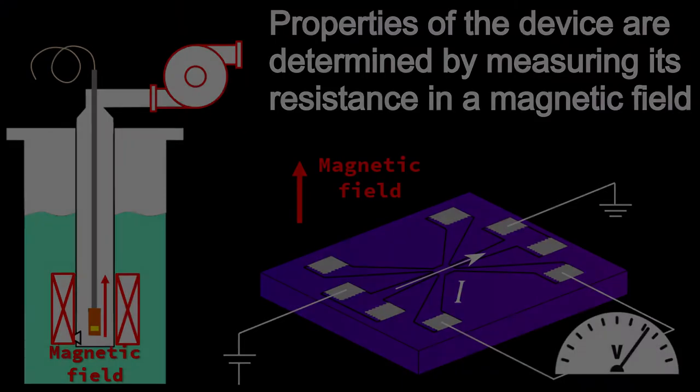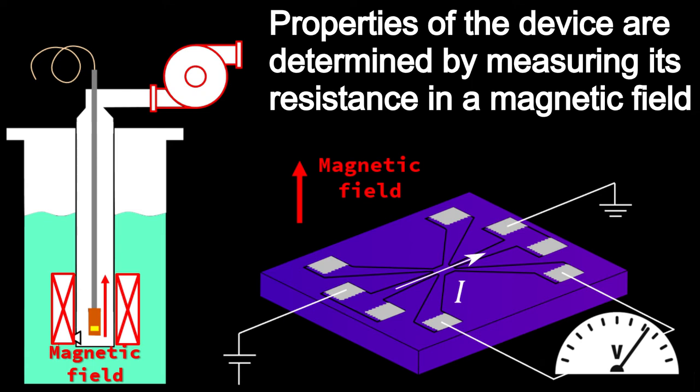We then measure the device's resistance while applying a magnetic field. This tells us the density and mobility of the 2D electrons.